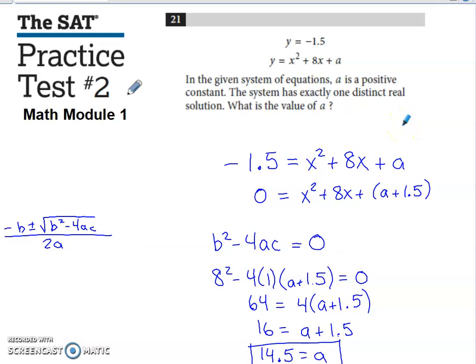Here's an SAT problem that I would classify as pretty tough. It says in the given system of equations, A is a positive constant. The system has exactly one distinct real solution. What is the value of A?